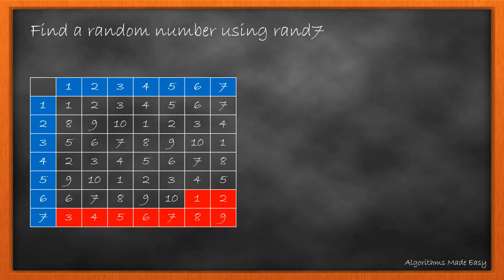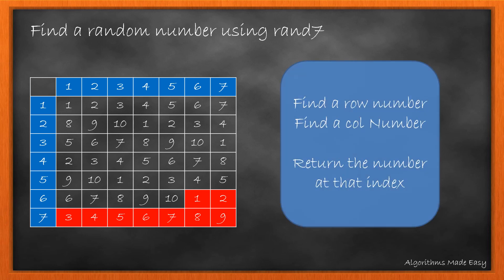Let's see it with an example. We will try to find a number between 1 to 10 using the random 7 method. We will use the random function twice. Once to calculate the row number and once to calculate the column number.